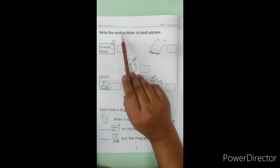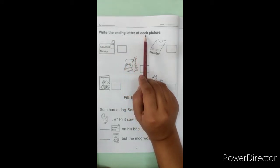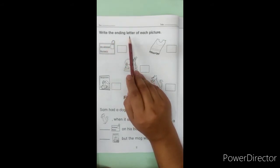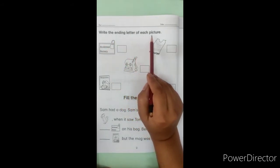Write the ending letter of each picture. Read it again. Write the ending letter of each picture.